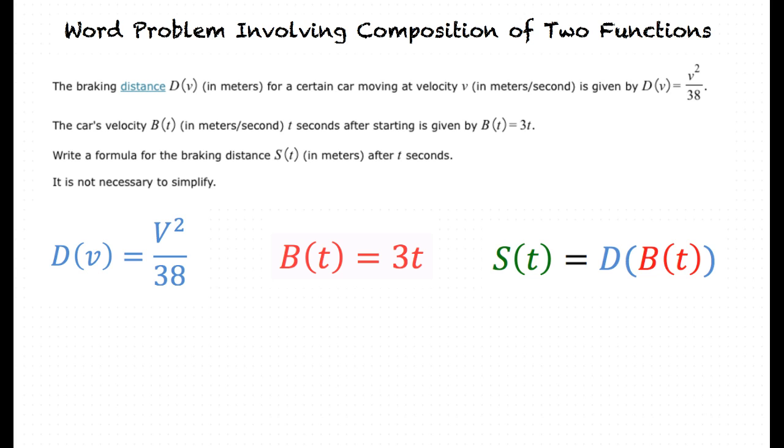We will use the expression for b of t as an input for the function d, replacing the variable v. This is what we get, s of t equals d of 3t. Now, we insert 3t into the function d of v for the variable v. This gives us s of t equals 3t squared over 38.